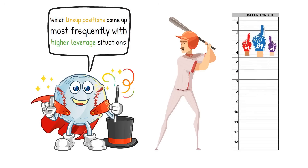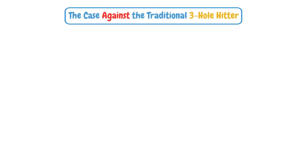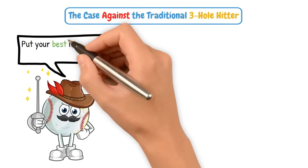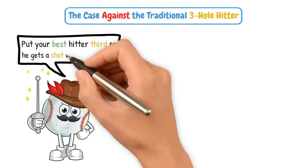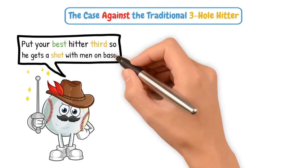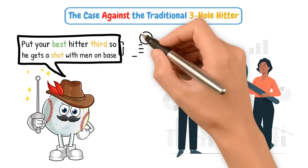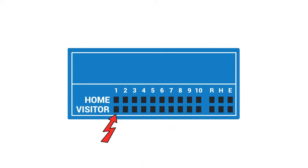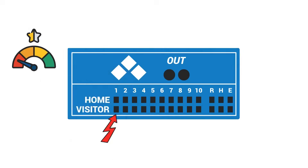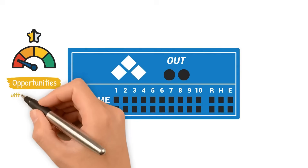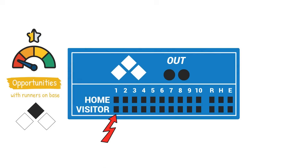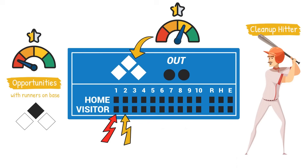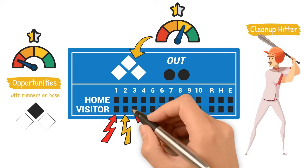Now taking a look at the traditional 'three-hole is your best hitter' standpoint: the old-school approach says put your best hitter third so he gets a shot with men on base. But statistically, that may not be optimal. The three-hole often comes up in the first inning with two outs and nobody on. It actually has fewer opportunities with runners on base than the second spot, and meanwhile, the cleanup hitter often bats with the bases empty in the second inning. So if your best hitter is batting third, you may be limiting their value.